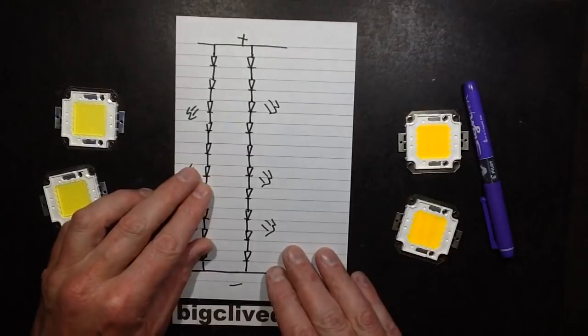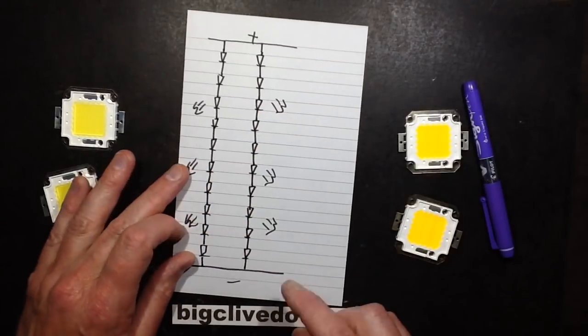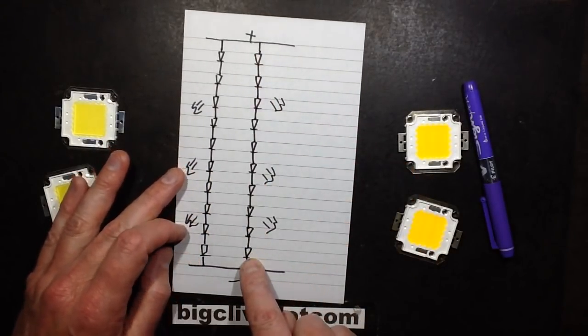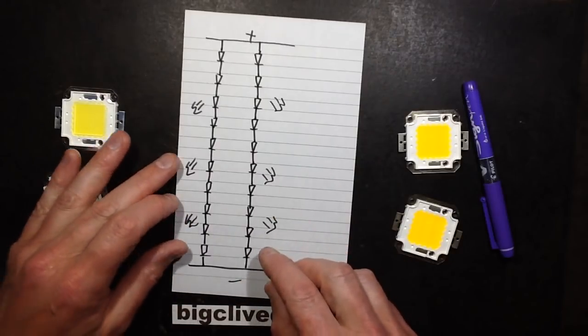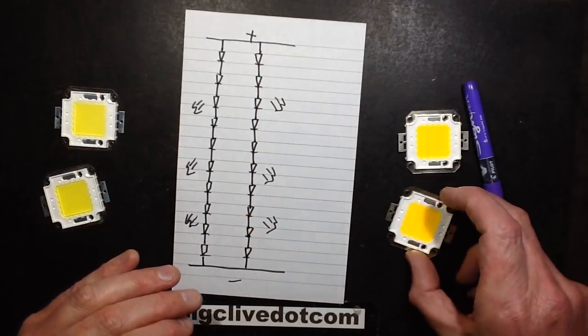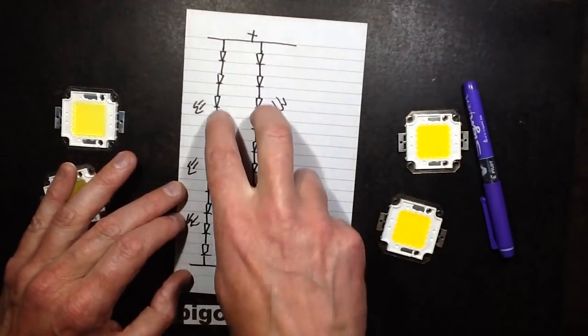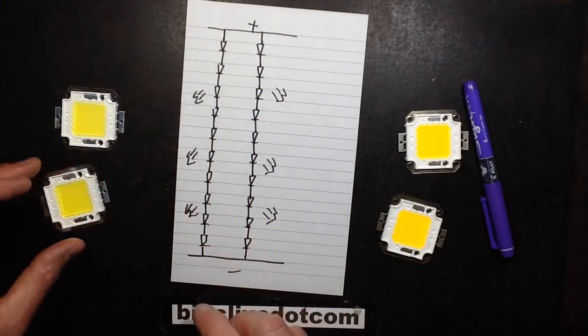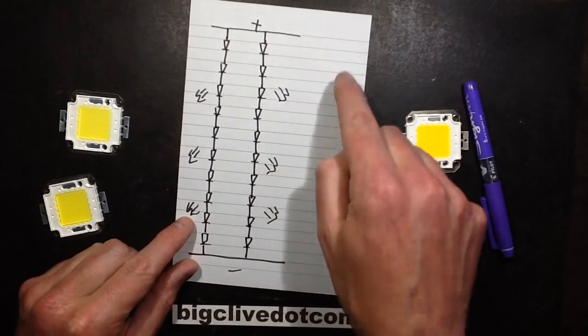So here's the inside of these LEDs. Normally this configuration, you've got 10 LEDs in series in each row. Depending on the wattage of the LED, each of these is a 1 watt chip. This is a 20 watt so it's actually got two rows of 10 LEDs, and in case of the 100 watt it's actually got 10 rows.